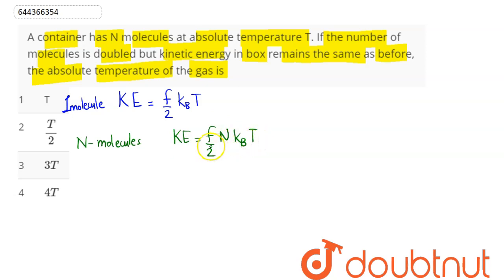Now here it says at N molecules temperature T. Now if number of molecules is doubled but kinetic energy in box remains the same as before, the absolute temperature of the gas is.